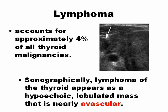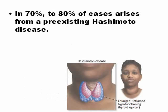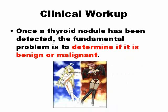Lymphomas of the thyroid represent only 4% of all thyroid malignancies. A characteristic feature is that they are not vascular — there is not a lot of blood flow inside a lymphoma. Seventy to eighty percent of cases are posterior to, or associated with, Hashimoto disease.